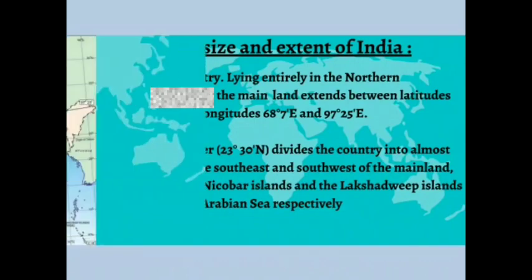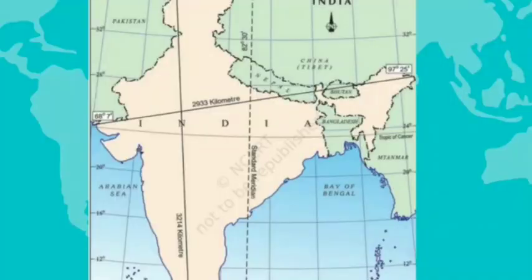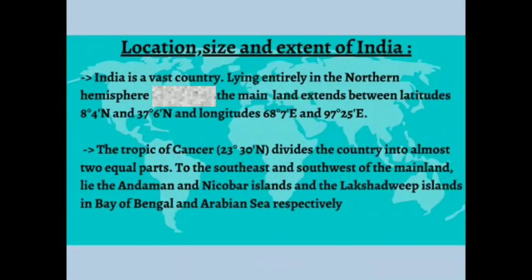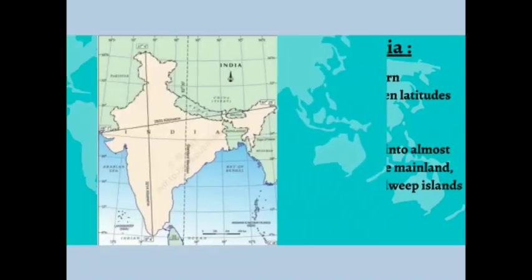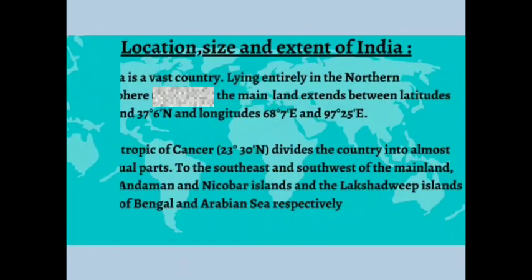Taking a closer look at the map, you can see the Tropic of Cancer passing through India from left to right, dividing the country into northern and southern parts. There are almost eight states through which the Tropic of Cancer passes. To the south-east and south-west of the mainland there are the Andaman and Nicobar Islands in the Bay of Bengal, and in the Arabian Sea there are the Lakshadweep Islands.